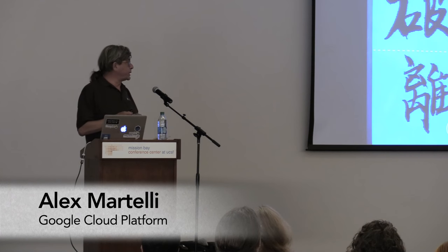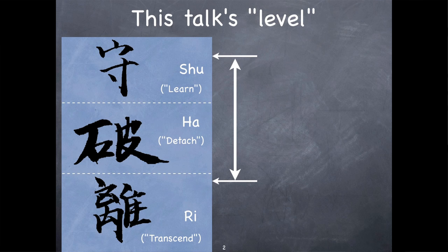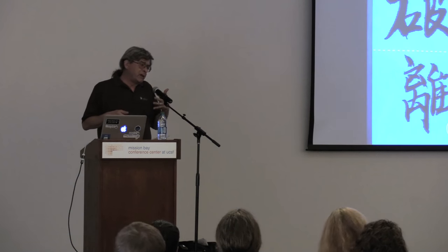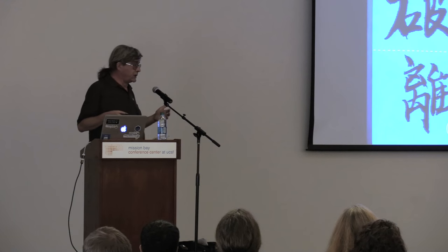I always like to start explaining the range of levels — not a classification into beginner, intermediate, advanced, which makes absolutely no sense because every talk covers a range. I like to call the levels by the names given in Noh theater and later in Aikido and other martial arts: shu, where you're learning; ha, where you're detaching from learning into the real world; and ri, where you transcend learning. This talk addresses anybody but the rankest beginner — definitely all intermediate layers.